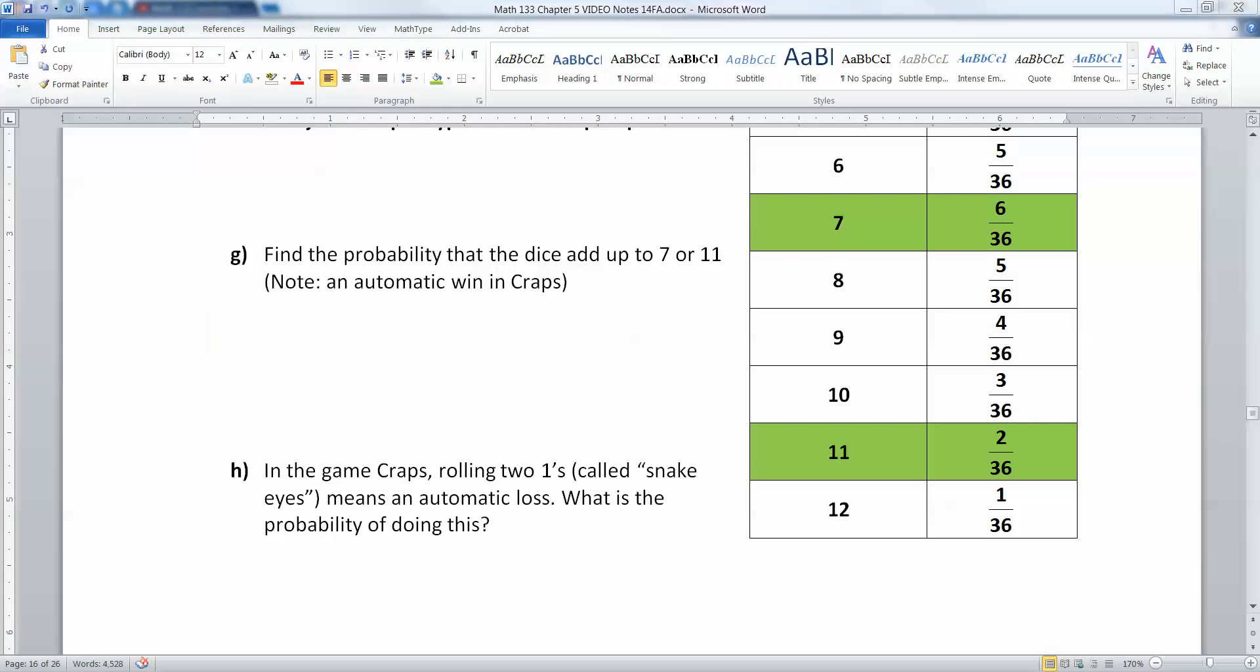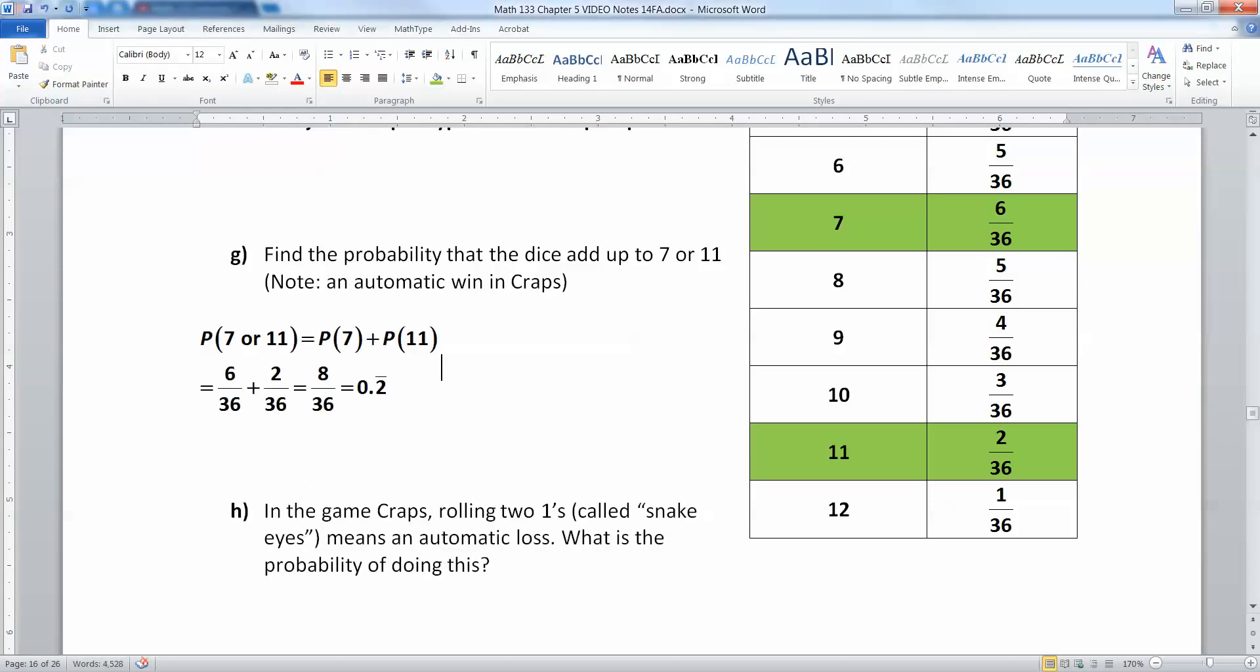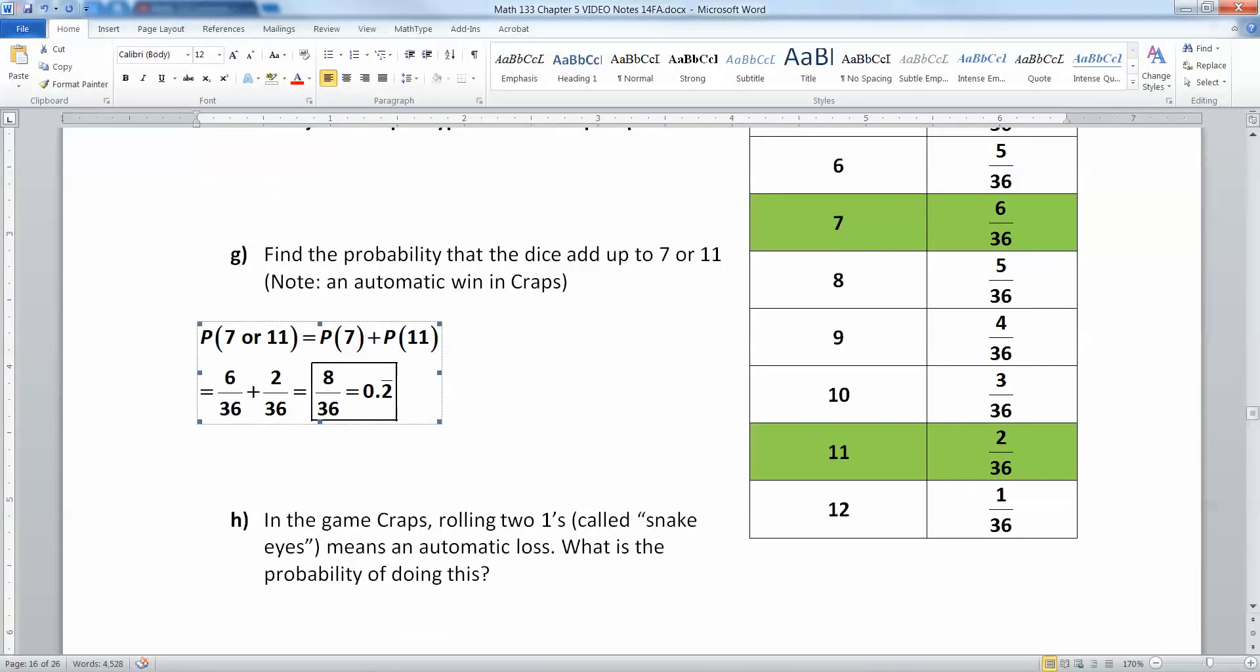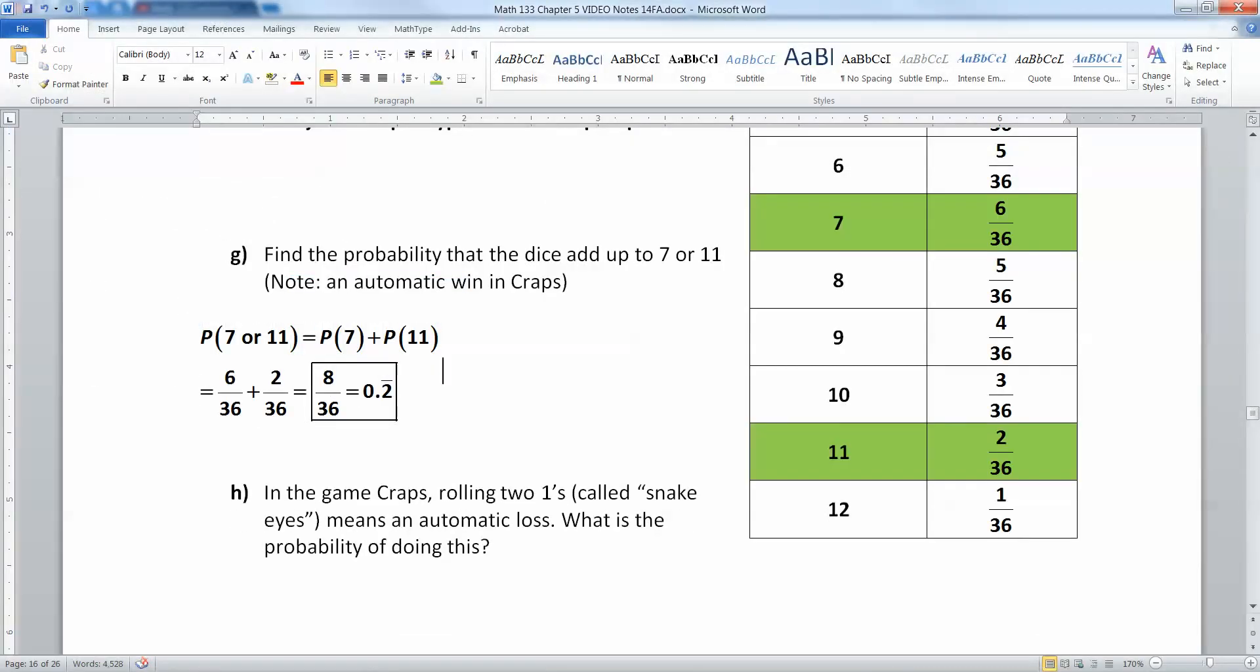So I want the probability of seven plus the probability of 11. And that would be six out of 36 plus two out of 36, which makes eight out of 36 or 0.2 repeating.